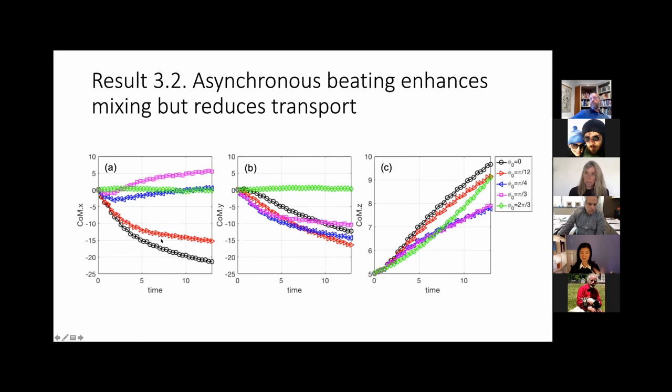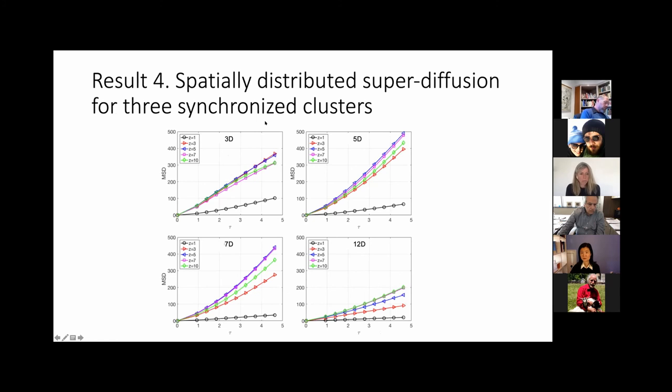To summarize the results, asynchronous beating enhances mixing but reduces transport. We can look at the mean square displacement as a function of these different spacing and also as a function of different layers. We see super diffusion in the top layers. Depending on their distance, different layers have more convection, advection. That's spatially distributed movements.